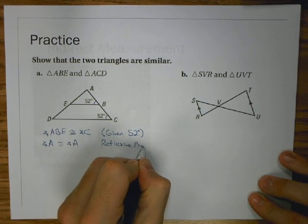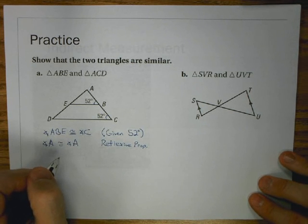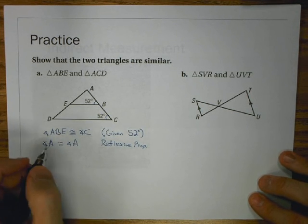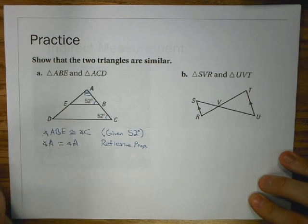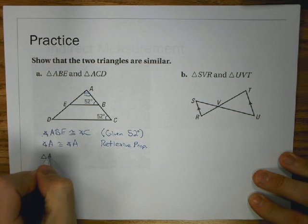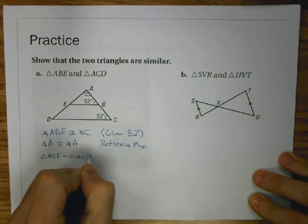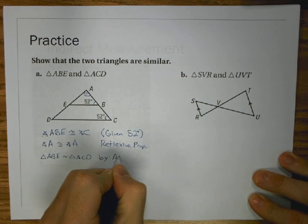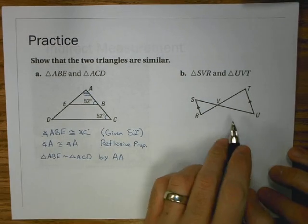Well, this is going to be our reflexive property. This angle appears in both triangles. So there's an angle. There's my other angle. Let's mark this one. That's enough now to say that triangle ABE is similar to triangle ACD by angle-angle.